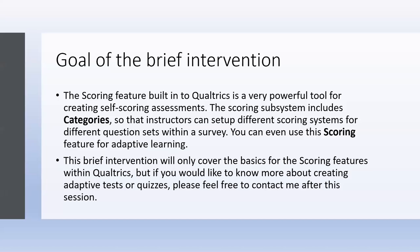I'm calling this a brief intervention. I'm an instructional technologist, but I also have training in sport and performance psychology. I teach performance psychology part time for another university. When I'm working with students who are going to be working with different types of organizations, we always talk about this idea of brief intervention — assess what the problem might be and develop an intervention for it. Today I'm going to cover the basics of the scoring features within Qualtrics, but if you'd like to know more, especially how to use Qualtrics for adaptive learning, feel free to contact me after this session.